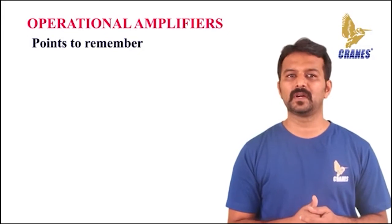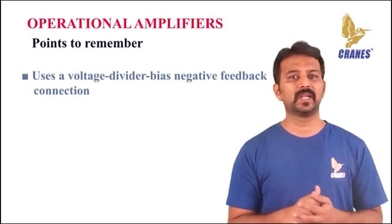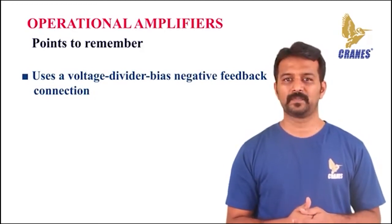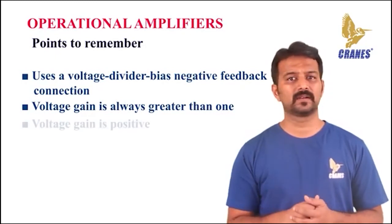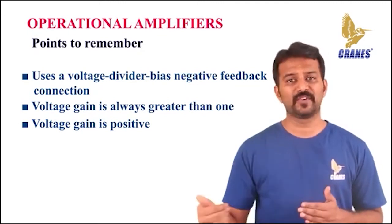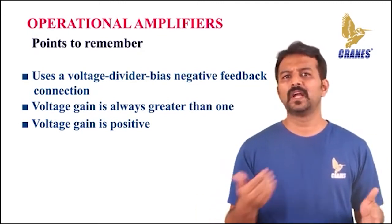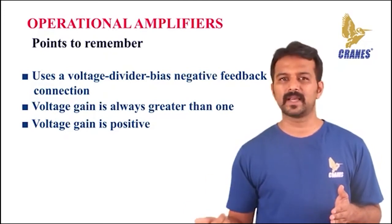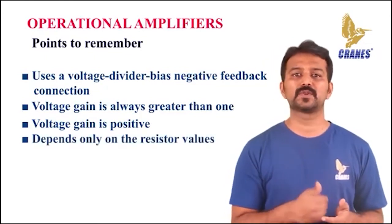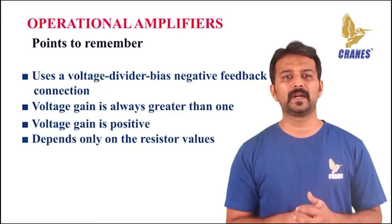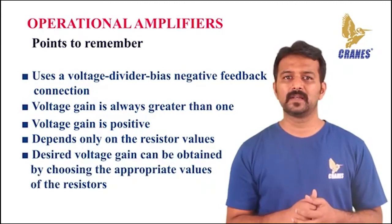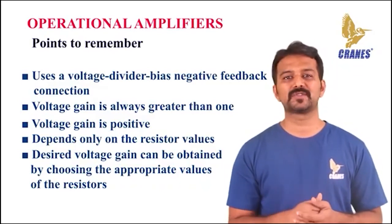A few points to remember about the non-inverting amplifier: it uses a voltage divider bias negative feedback connection. The voltage gain is always greater than 1. The gain is positive, indicating that for an AC input the output is in phase with the input signal, and for a DC input the output polarity is the same as the input polarity. The voltage gain depends only on the resistor values and is independent of the open loop gain of the op-amp. The desired voltage gain can be obtained by choosing appropriate values of the resistors.